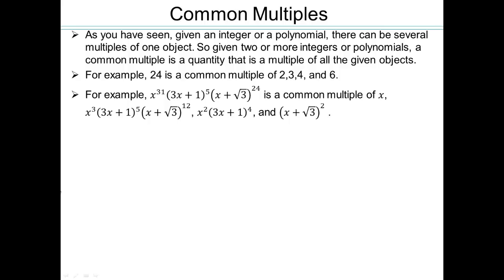Let's look at a polynomial. We're saying that this quantity here is a multiple of x — yes, because it just needs x to the power 1, and it has x to the power 31, so that matches up. This number is also a multiple of this polynomial here, because we need x to the third, so 3 or more power of x. 3x plus 1: 5 or more power. x plus square root 3: 12 or more power.